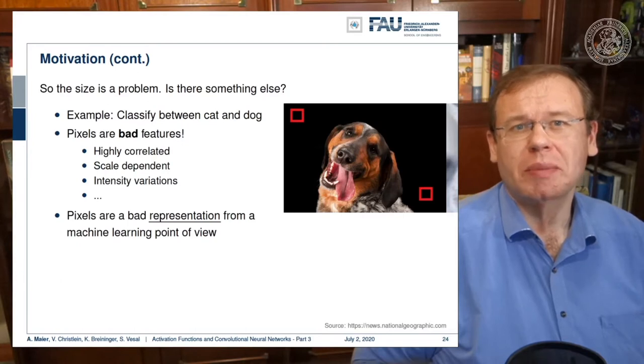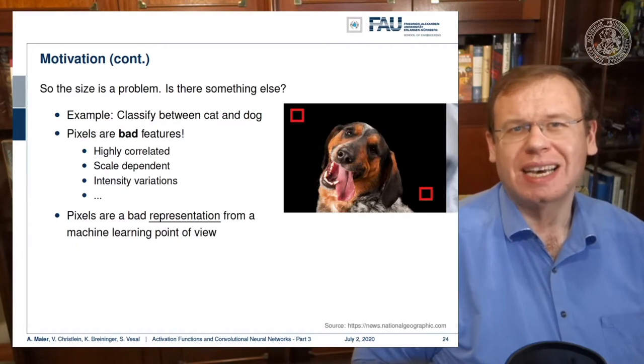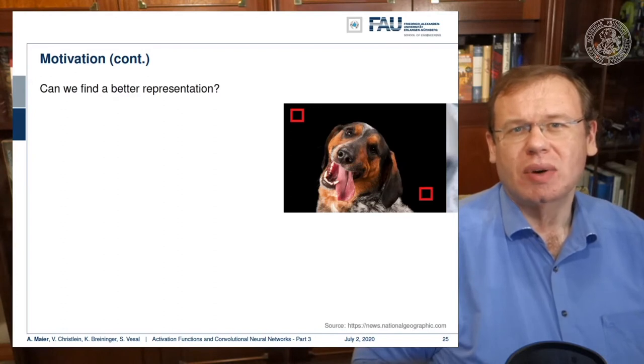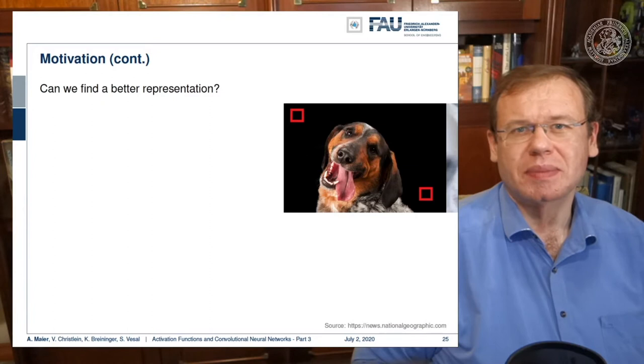They're highly correlated, scale dependent, and have intensity variation. So there is a huge problem, and pixels are a bad representation from a machine learning point of view.